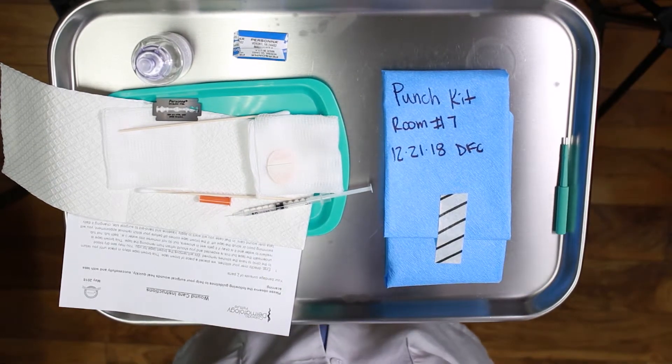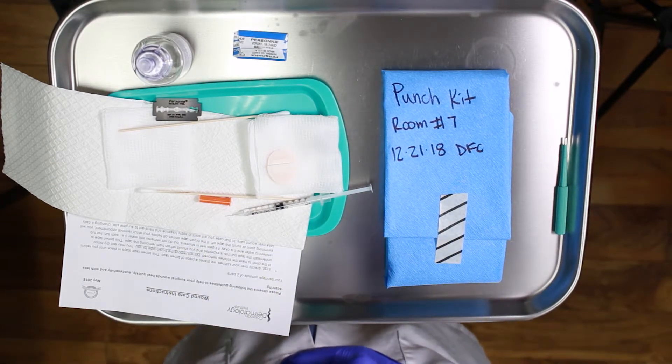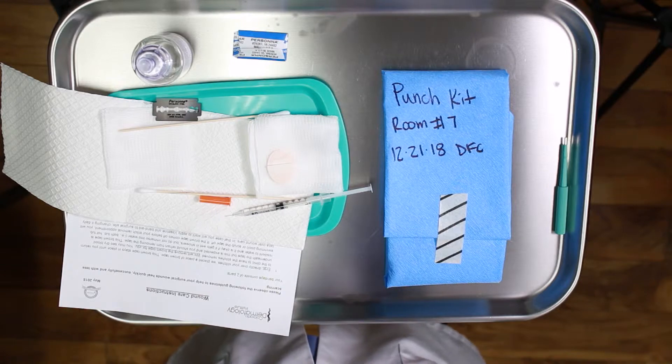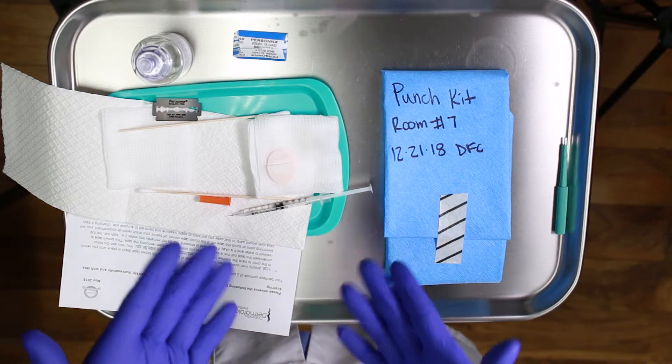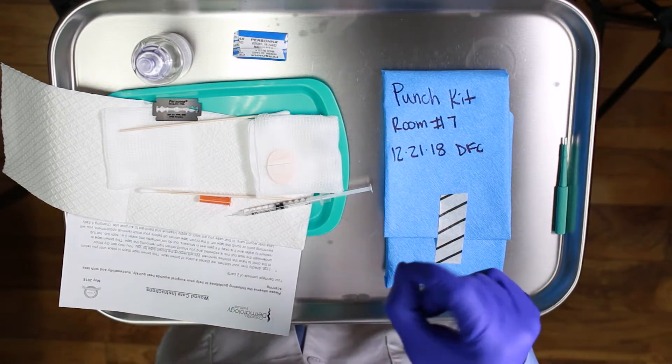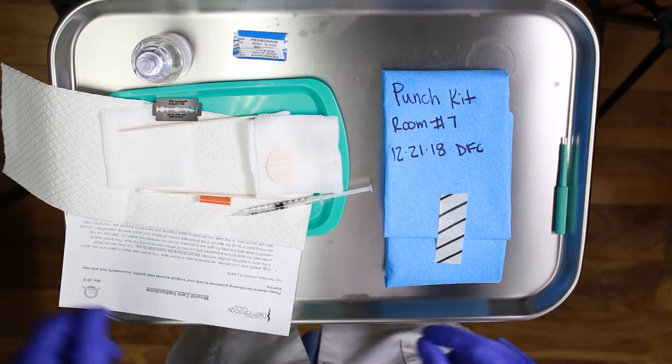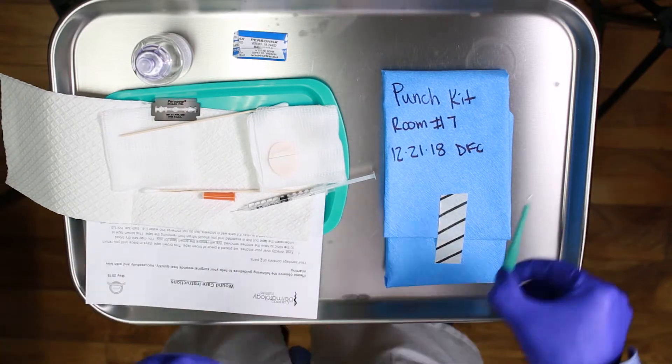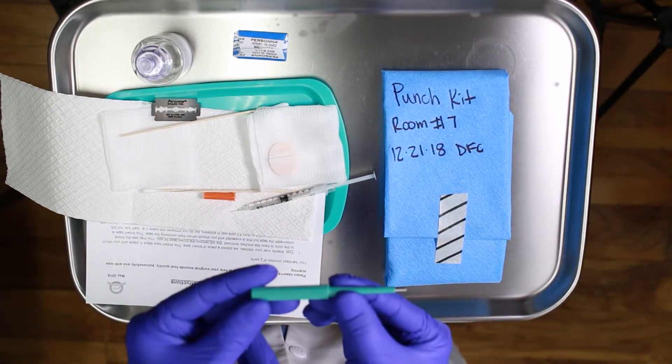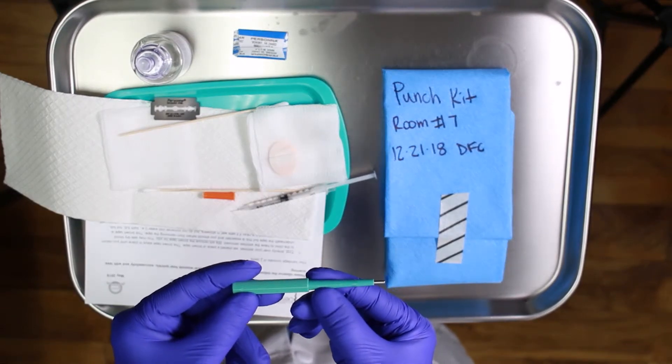So now we're moving on. We've done our shave biopsy. This is probably 90% of the time we're going to do a shave. If we're going to do a punch, the provider or doctor needs to tell you that. We'll say, okay, we need to do a special type of biopsy. The way I say it to the patient is we're going to do a cookie cutter type of biopsy. And I'll show you why I say that. But let me show you the tool first for that, which is right here. There's multiple sizes. This size right here is very small. This is a two punch.